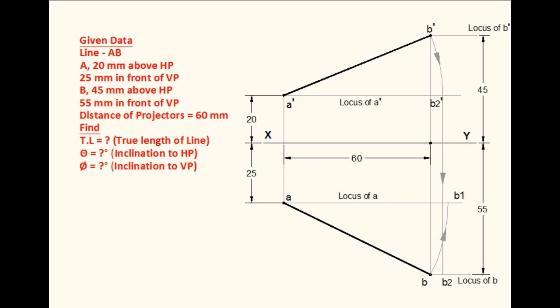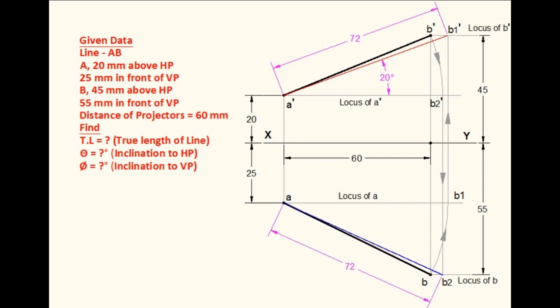Draw a vertical line through B1 to meet the locus of B dash. This point is B1 dash. Join A dash and B1 dash. This line gives the true length of the line AB. The inclination of this line is the true inclination of the line AB with the horizontal plane. Join A and B2. This line also gives the true length of the line. The inclination of this line is the true inclination of the line AB with the vertical plane.